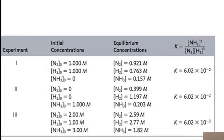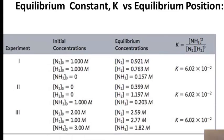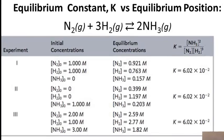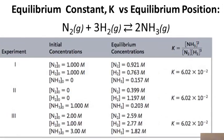Let's look at an example. Here we have the reaction of nitrogen and hydrogen forming ammonia. We have three different experiments, and every single one of them ends up with the same value of K. It's implied they're all at the same temperature, but in each one, we're starting with different initial conditions.